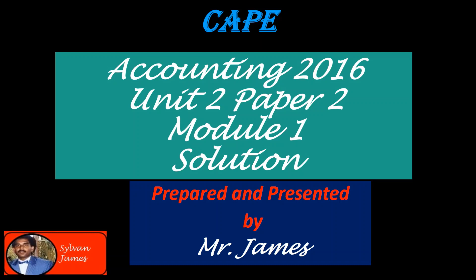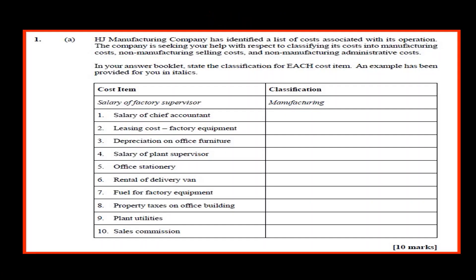Let's have a look at the question. H&J Manufacturing Company has identified a list of costs associated with its operation. The company is seeking your help with respect to classifying its costs into manufacturing costs, non-manufacturing selling costs, and non-manufacturing administrative costs. In your answer booklet, state the classification for each cost item. An example has been provided for you in italics.